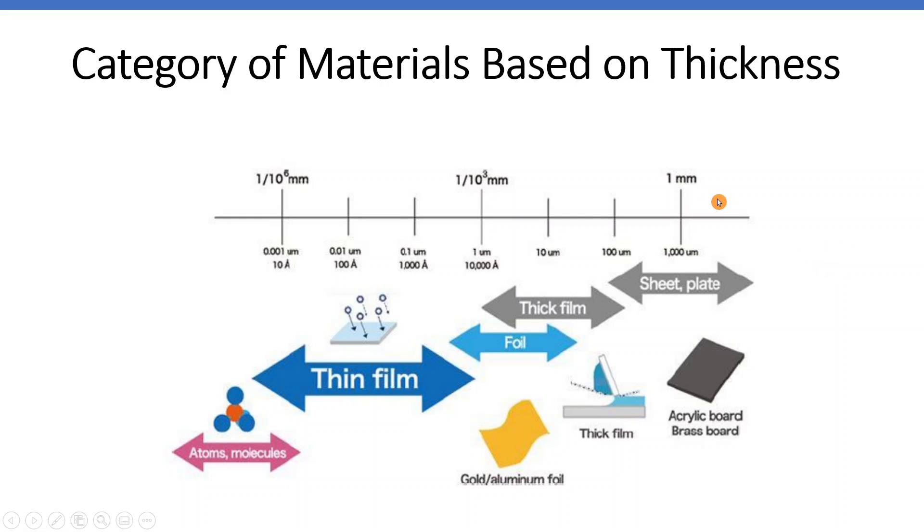So if the material, the thickness is around in the millimeter level, like around one millimeter, they usually call that the sheet metal or plate, like sheet material or plate material, like steel, aluminum, that's a sheet or plate.